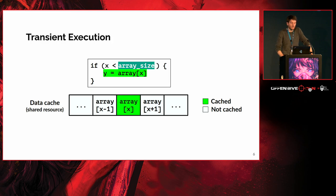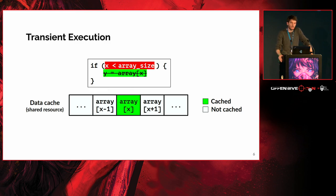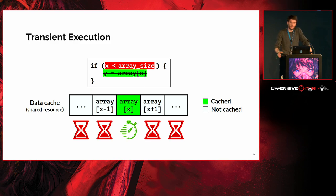If in the end this branch prediction was wrong, the processor must destroy all these wrong-path instructions in the pipeline and restart execution from the correct path. However, this microarchitectural trace — this access to array[x] — it happened, and it's still there. An attacker using this timing side channel can observe what the processor did in a wrongly speculated branch.